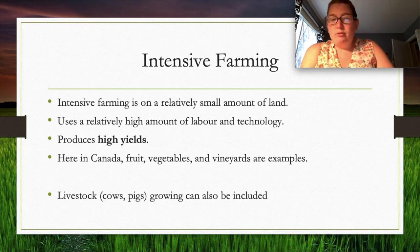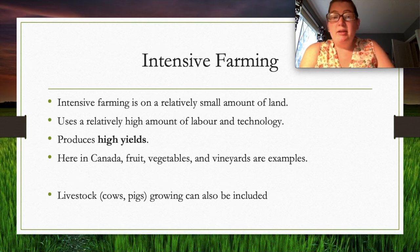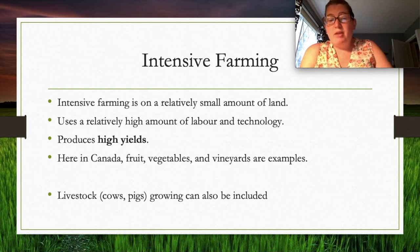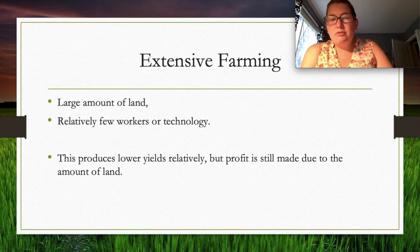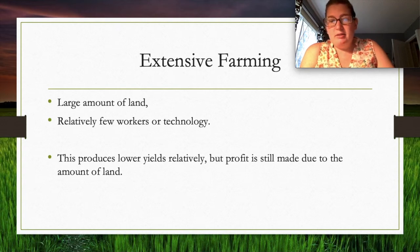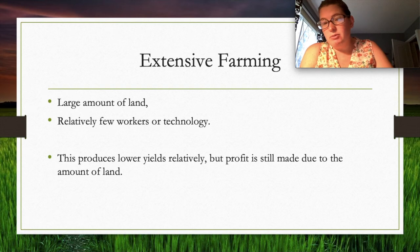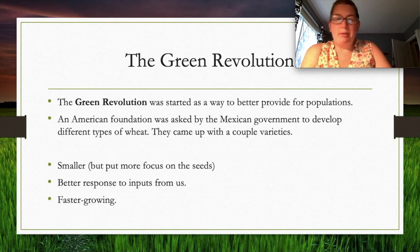Intensive farming uses a relatively small amount of land with high labor, technology, and high yields — vineyards in Canada are a good example. Livestock farming can also be intensive. The goal is to produce as much as possible. Extensive farming, by contrast, involves large amounts of land with little technology, few workers, and usually low yields and low profit — it's more like 'do as much as you can and hope for the best.'